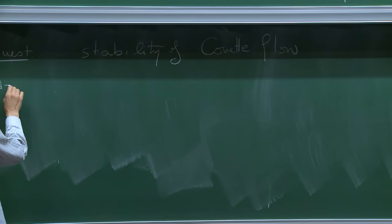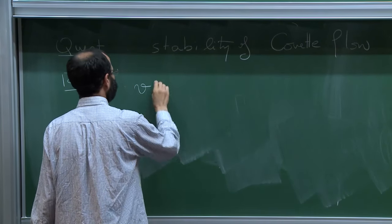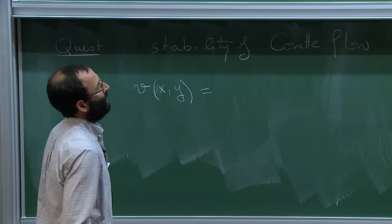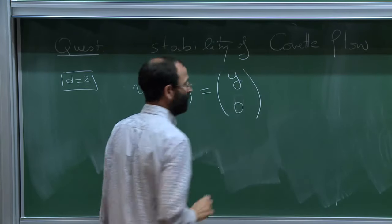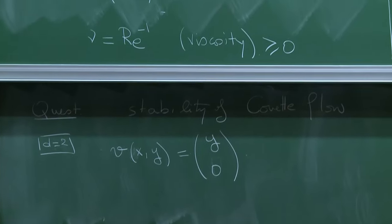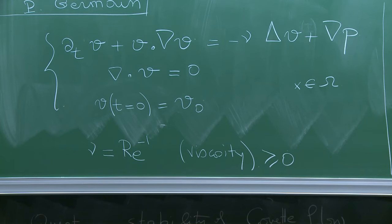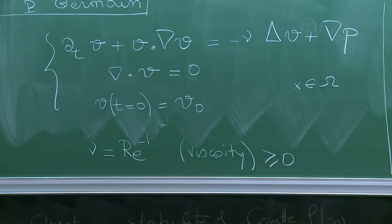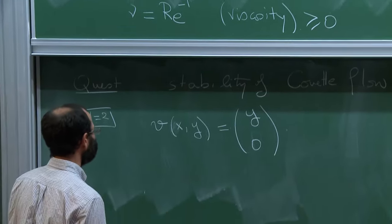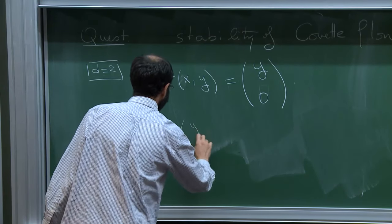In 2D, the Couette flow corresponds to v equal to (y, 0) — a function of x and y where v equals (y, 0). If you plug that into the equation, the Laplacian vanishes and v·grad(v) also vanishes, so it is a stationary solution. In dimension 3, the Couette flow is (y, 0, 0). The flow only depends on y, and it is divergence free because the x-derivative of y is zero.